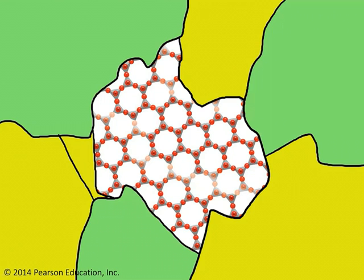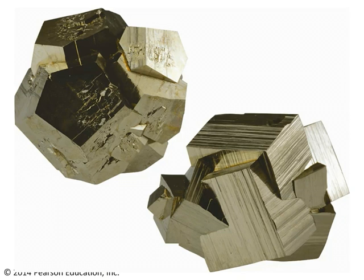Instead, they grow up under rather cramped circumstances, hemmed in by surrounding minerals, and so they end up taking on rather lumpy, disorganized-looking shapes. The shape that a mineral will grow into if it gets the chance and has sufficient space is called its habit.